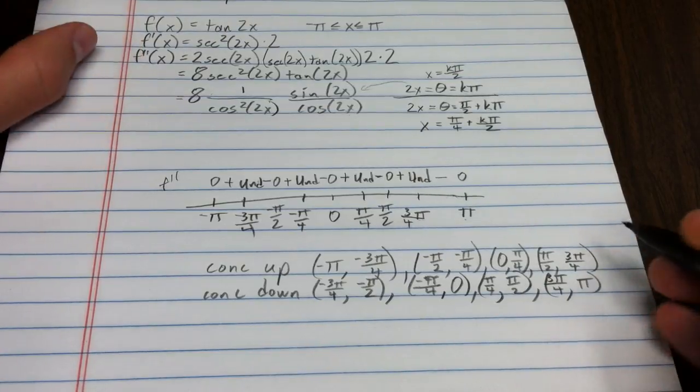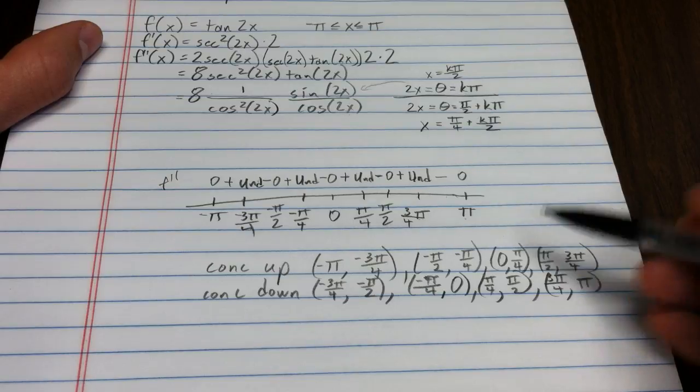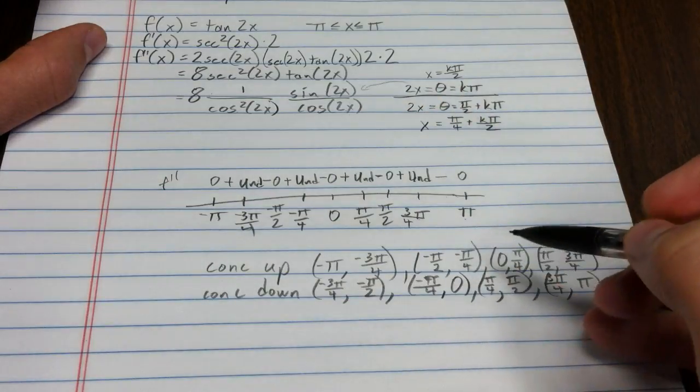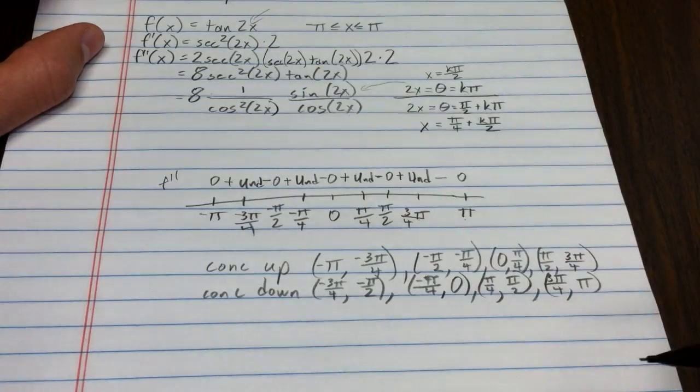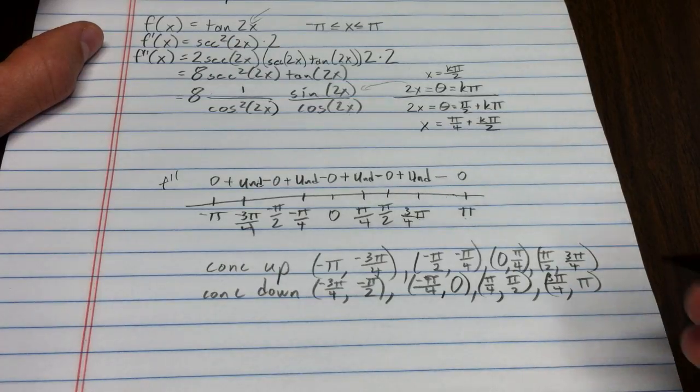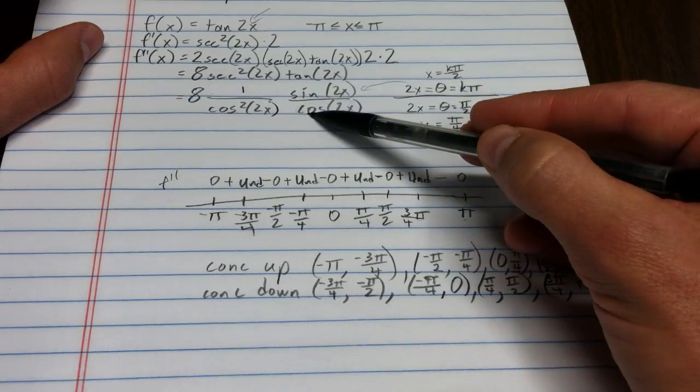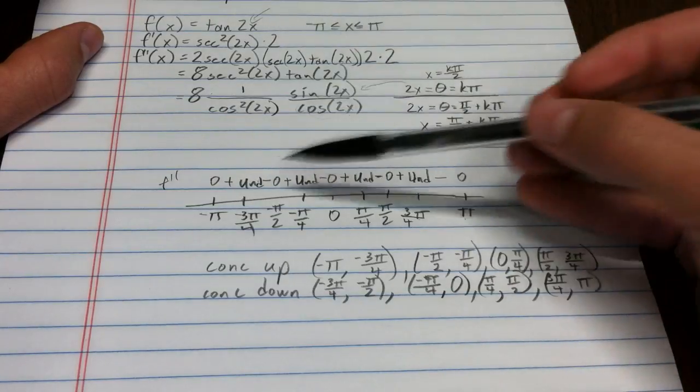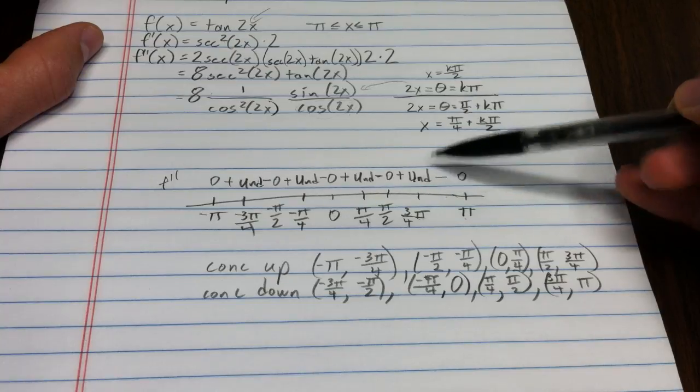There you have it. Now, the question that it ends with is find all inflection points of the function. Now, an inflection point can't be a place where the function is undefined. So, scrolling back up to the function. Where is tangent undefined? Well, if you look at tangent, tangent is undefined at all the places the second derivative is undefined. Those cannot be inflection points.